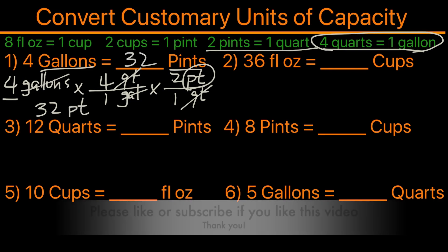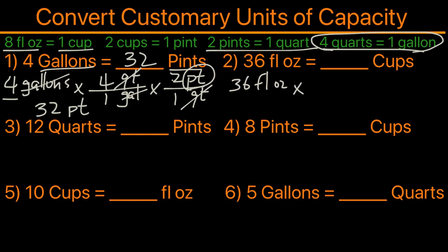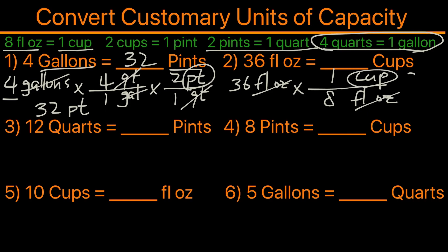For the second example we have 36 ounces and we want to convert to cups. Since we have the conversion directly from ounces to cups, we write it out with cups on top. Since there are eight ounces in one cup, the ounces cross out and we're left with cups. We have 36 divided by 8, which gives us 4.5 cups.